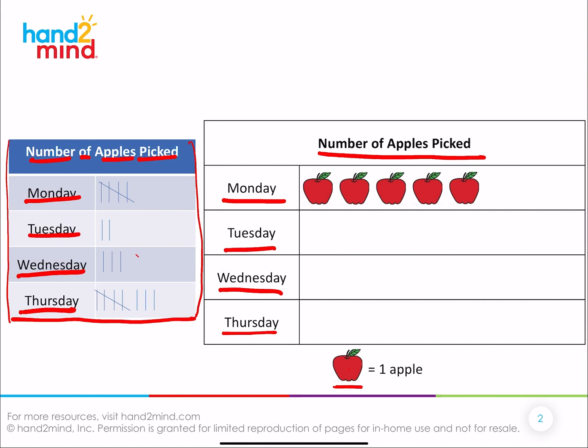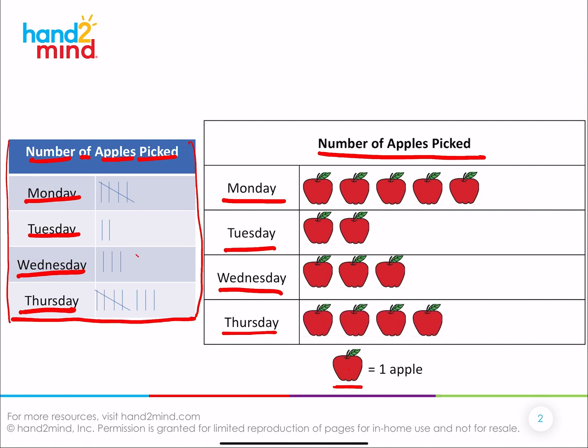So on Tuesday how many were picked? Two. And on Wednesday? Three. And on Thursday? One, two, three, four, five, six, seven, eight — there were eight.